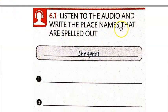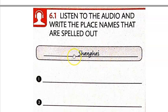Exercise 6.1: you're going to listen to the audio and write the place names that are spelled out. Number your paper 1 through 10. I'm going to play the example so you can see what kind of place name they're going to give you. The example is Shanghai: S-H-A-N-G-H-A-I.